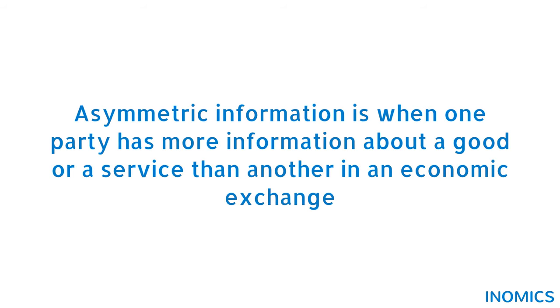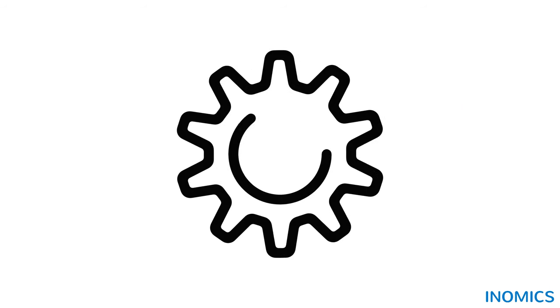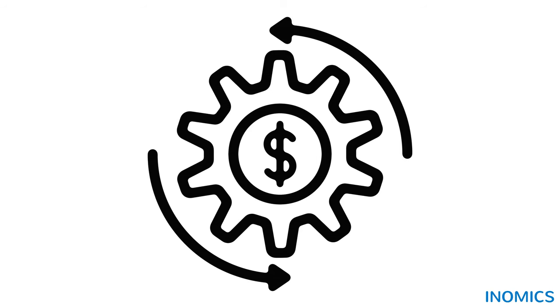Asymmetric information is when one party has more information about a good or a service than another in an economic exchange. In any complex economy, asymmetries of information are everywhere. They allow people and businesses to become more productive within their chosen specialisation.